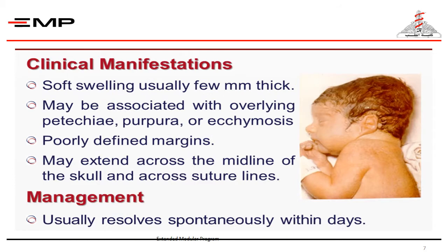Clinical manifestations of caput succedaneum: soft swelling, usually a few millimeters in depth, may be associated with overlying petechiae, purpura, or ecchymosis, with poorly defined margins. It can extend across the midline of the skull and across suture lines. It usually resolves spontaneously within days and no management is needed.